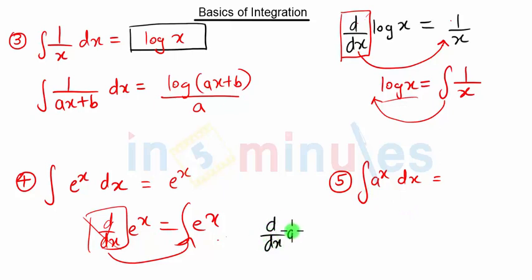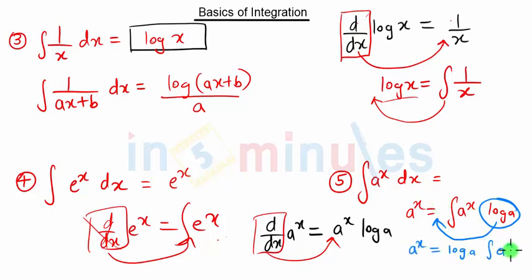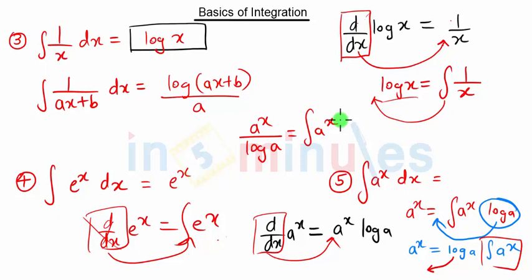For the integration of e raised to x — we know the derivative of a raised to x is a raised to x times log a. Taking this derivative to the right-hand side gives integration of a raised to x times log a. Since log a is independent of x, we take it outside the integral sign. Rearranging, we get that the integration of a raised to x is a raised to x upon log a. You can derive all these formulas from derivatives. That's the basics of integration — we'll see more in our next video. Stay tuned, thank you.